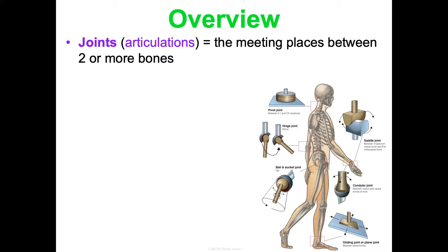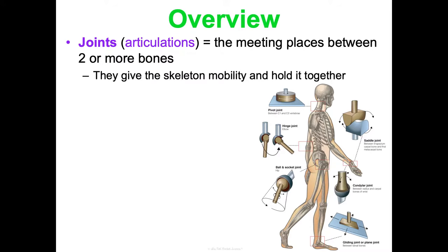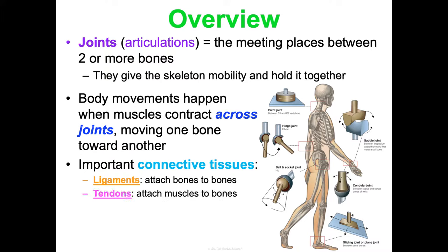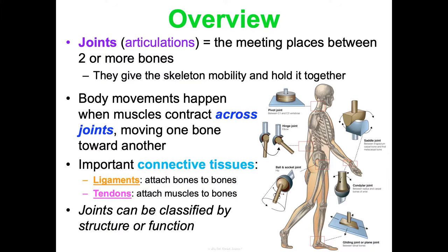Joints, also called articulations, are the meeting places between two or more bones. They give the skeleton mobility and hold it together. Body movements happen when muscles contract across joints, moving one bone toward another. Important connective tissues involved in joints are ligaments, which attach bones to bones, and tendons, which attach muscles to bones. Bones allow us to move, but can't move without muscles and joints, since bones are static.